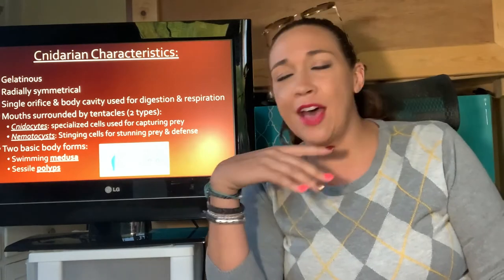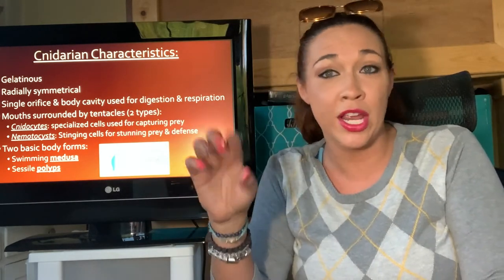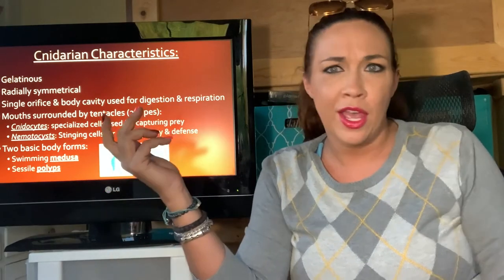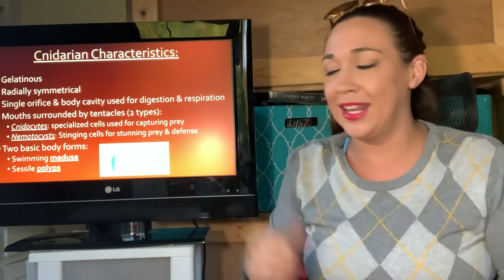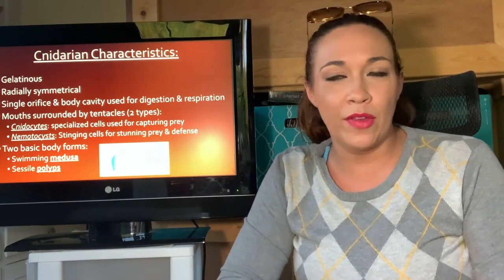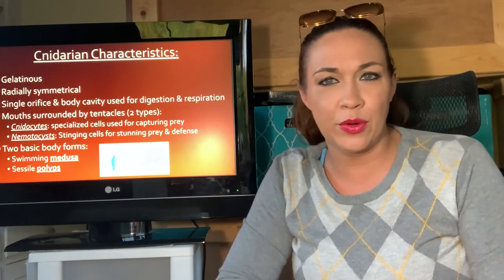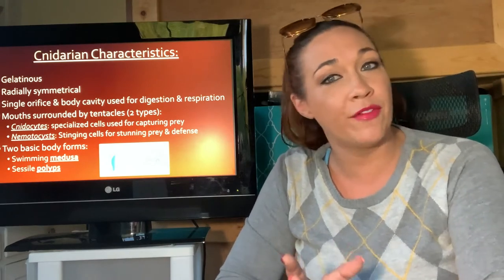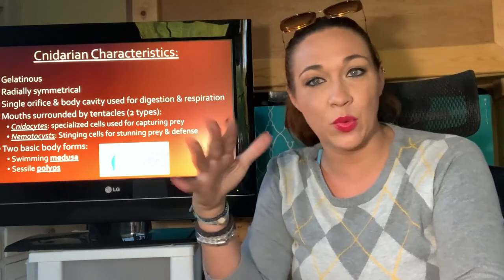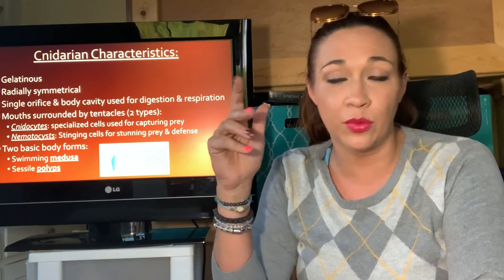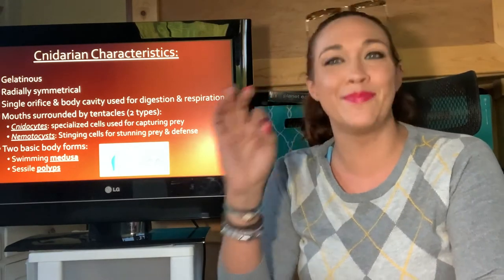Cnidarians have radial symmetry. Not many groups have it, so if you see radial symmetry, you're probably in this phylum. All those different organisms we looked at have slightly modified forms of radial symmetry, but they are all still radially symmetrical.